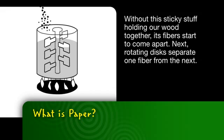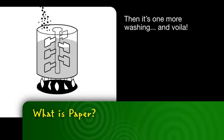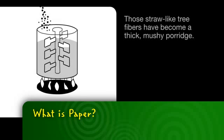Next, rotating discs separate one fiber from the next. Then, it's one more washing, and voila! Those straw-like tree fibers have become a thick, mushy porridge.